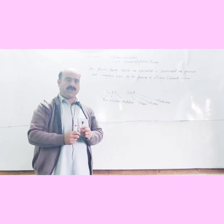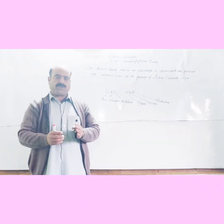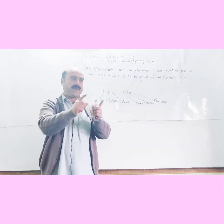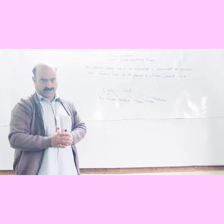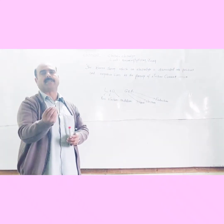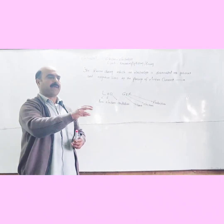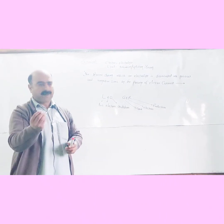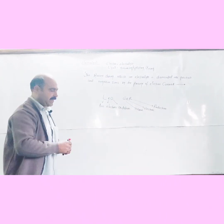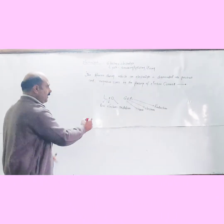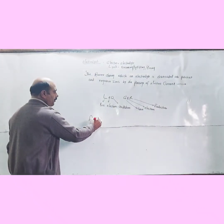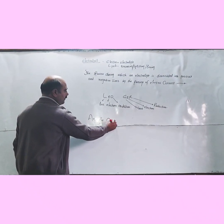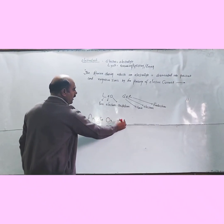Using this trick, students can easily remember: oxidation occurs at the anode (loss of electrons), and reduction occurs at the cathode (gain of electrons). The mnemonic is: ANOX — Anode Oxidation; and Red Cat — Reduction at Cathode.